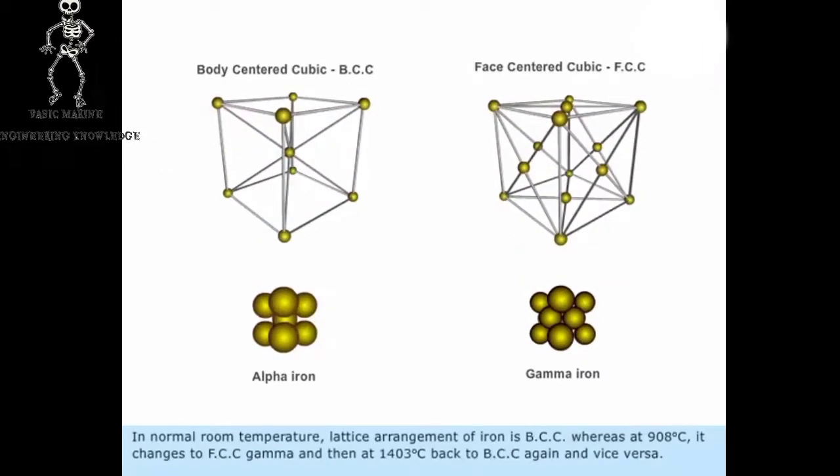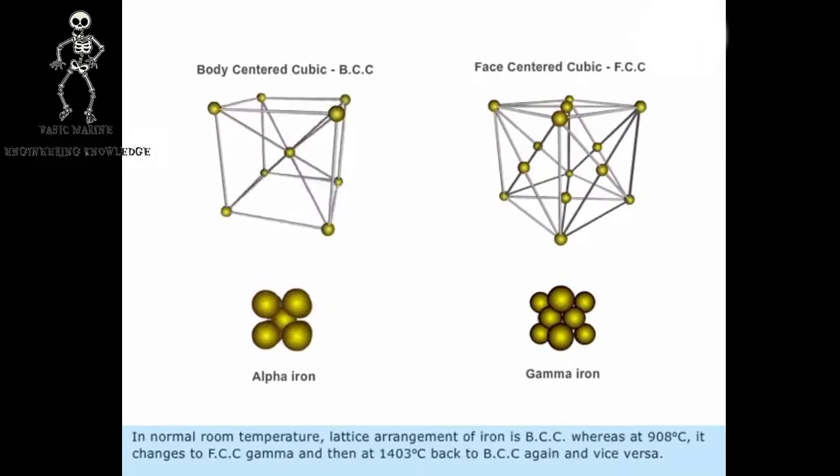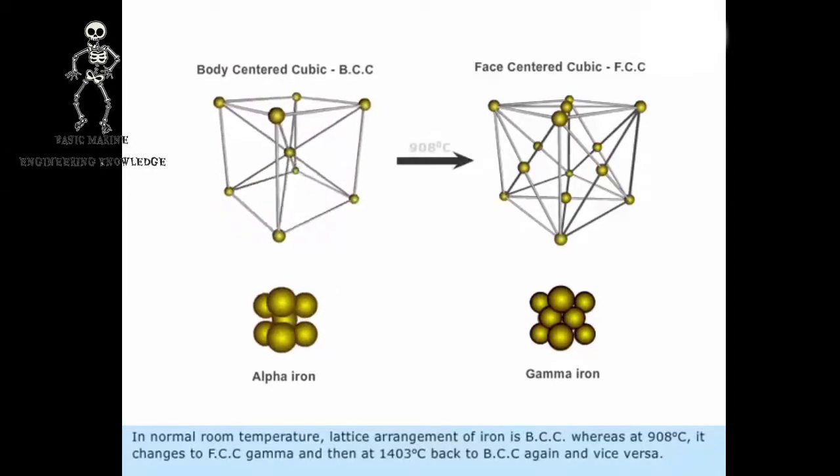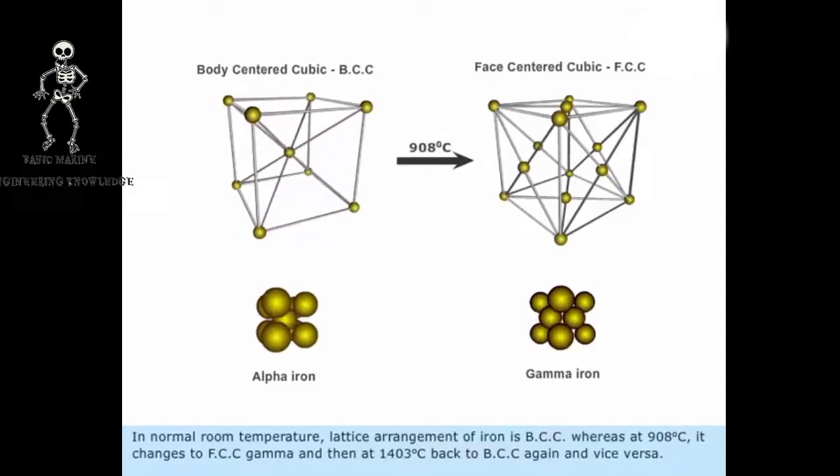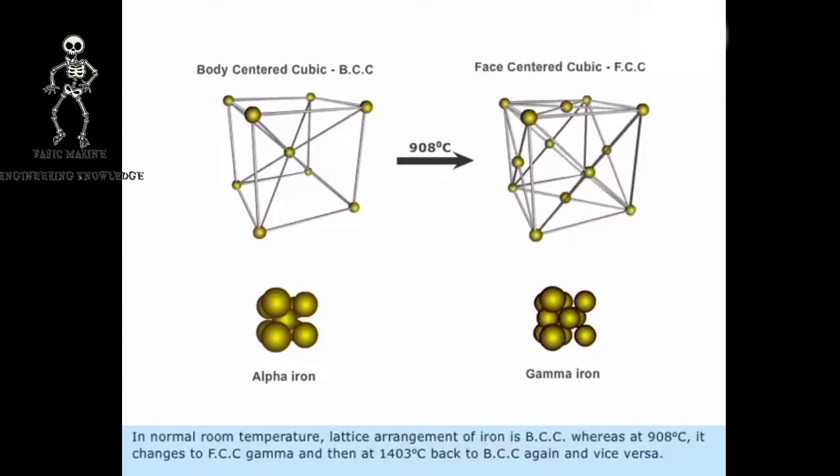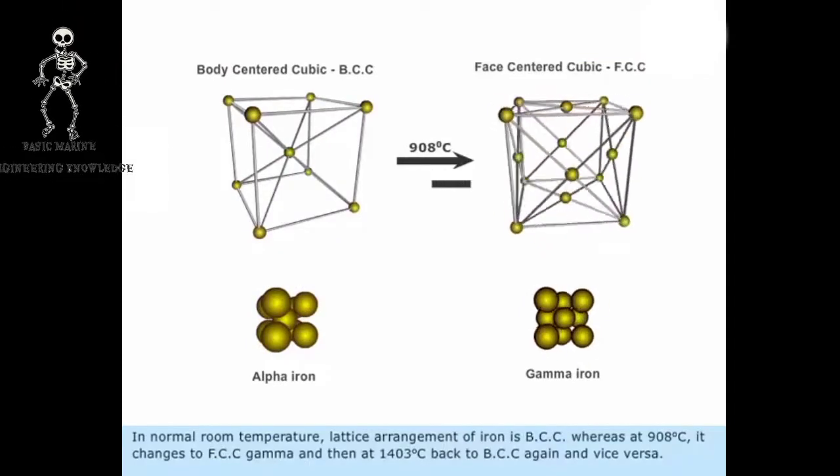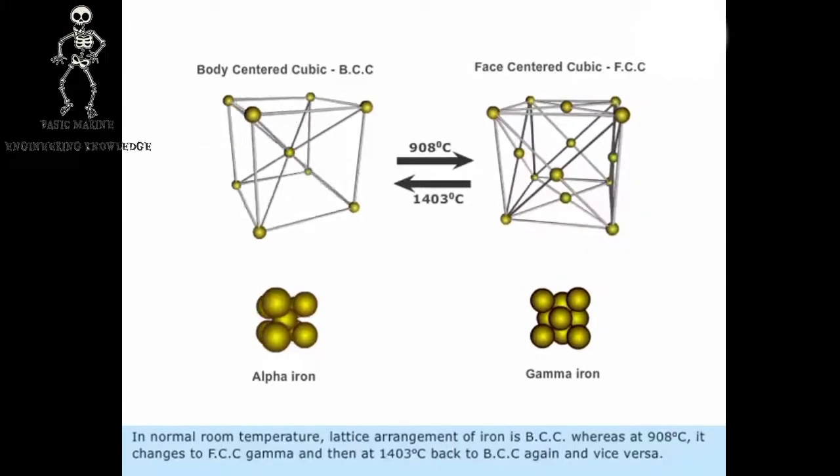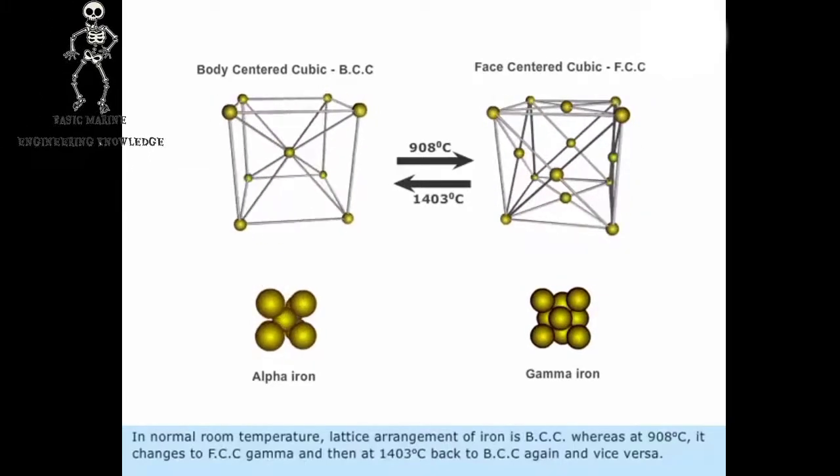In normal room temperature, lattice arrangement of iron is BCC, whereas at 908 degrees centigrade it changes to FCC gamma, and then at 1403 degrees centigrade back to BCC again, and vice versa.